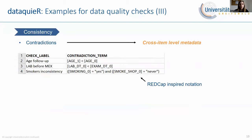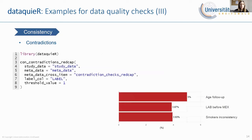It is possible to check for contradictions with DataQuer. Contradictions are stored in the cross-item level metadata. With the newest version of DataQuer, you can use a REDCap-inspired notation to specify these contradictions. For example, the first contradiction rule states that the age of participants at the follow-up examination should not be below their age at the baseline examination. For our example data, you can see that this error occurred for 5% of the participants, as shown in the bar chart, generated by the function call on the left.